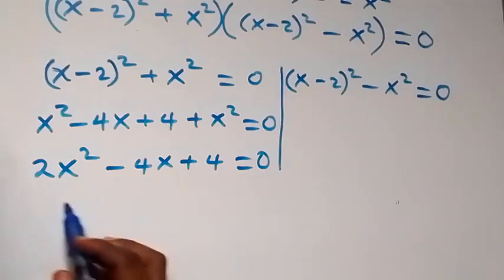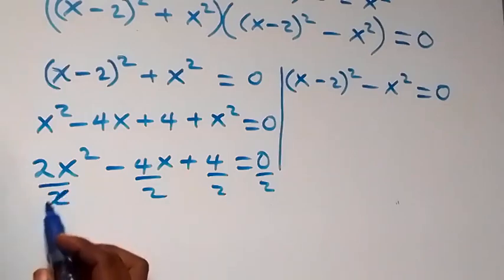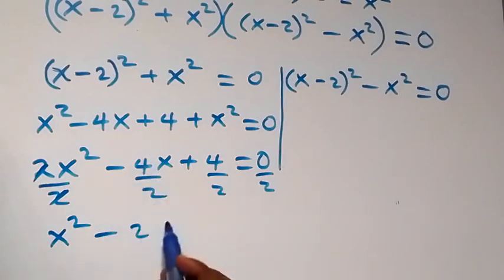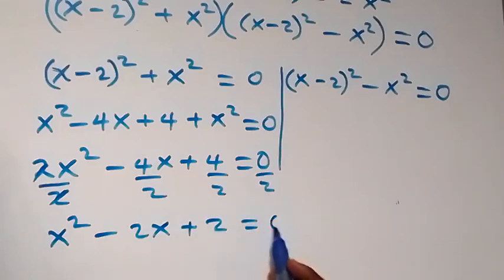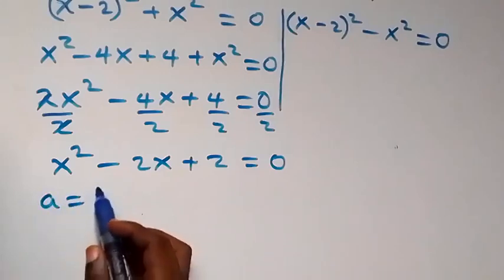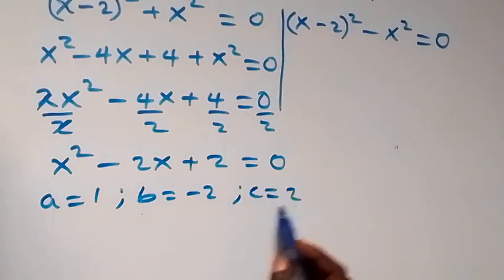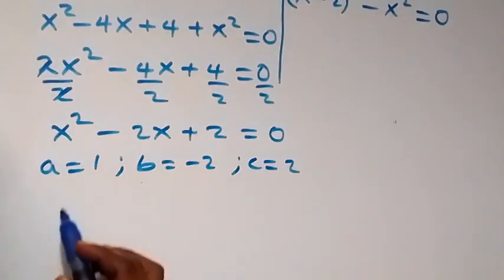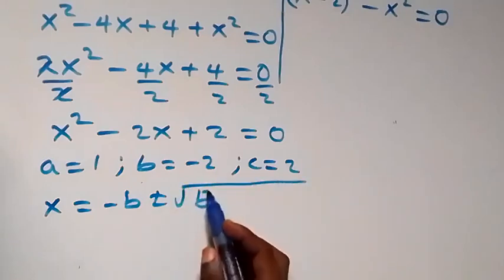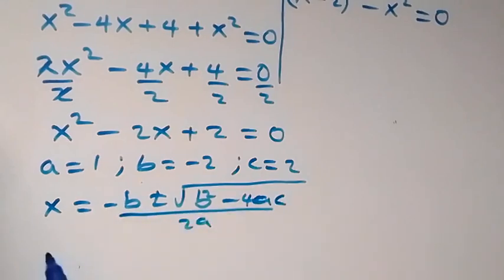We divide through by 2, so each term reduces: x squared minus 2x plus 2 equals zero. This is a quadratic equation where a equals 1, b equals minus 2, and c equals 2. From the quadratic formula: x equals minus b plus or minus square root of (b squared minus 4ac) all over 2a.